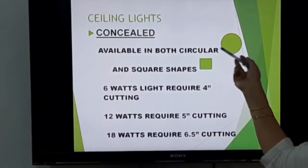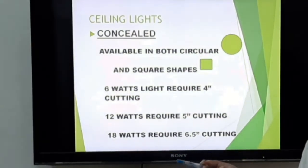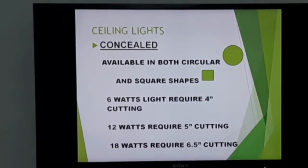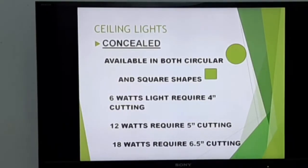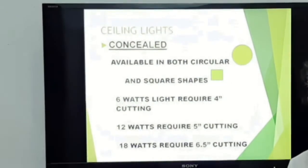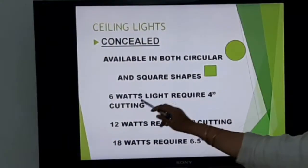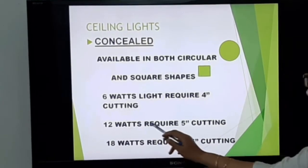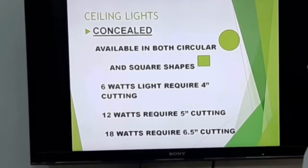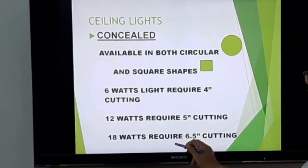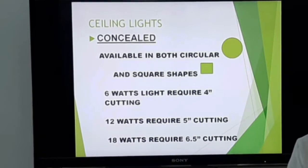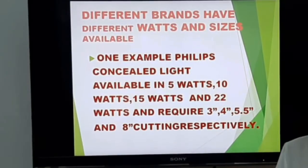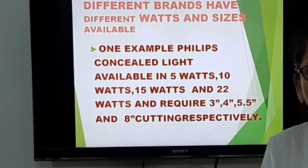With concealed lights, we see the fixture from the ceiling. We see the fixture in two shapes: circular and square. We talk about different wattages — these lights are 6 watts, 12 watts, and 18 watts. For 6 watts we need 4 inches cutting space; for 12 watts we need 5 inches; and for 18 watts we need 6.5 inches cutting space. Concealed lights are available in circular and square shapes.